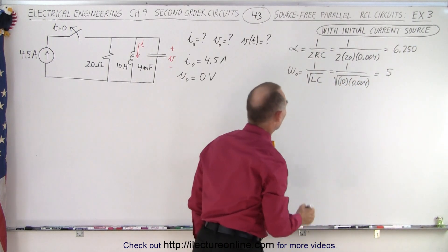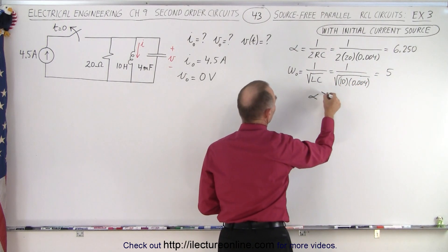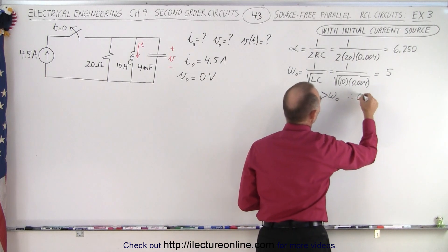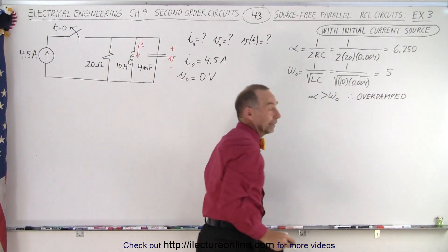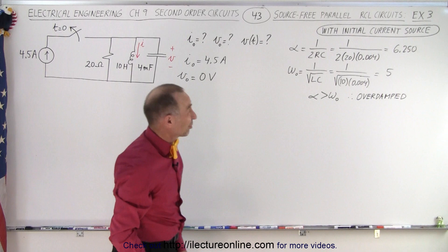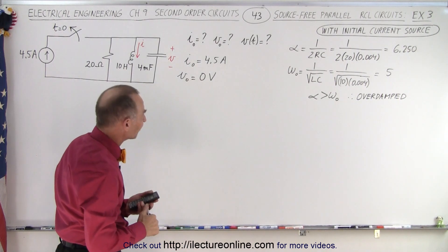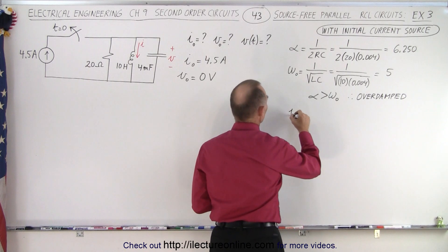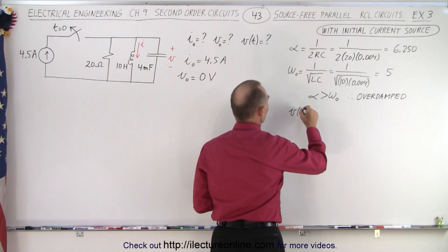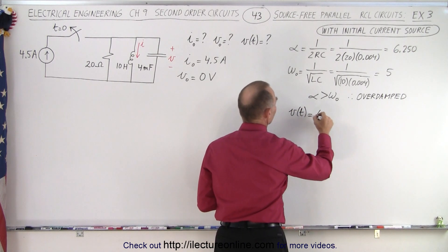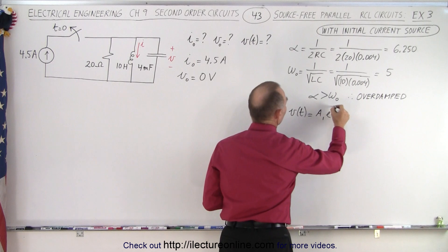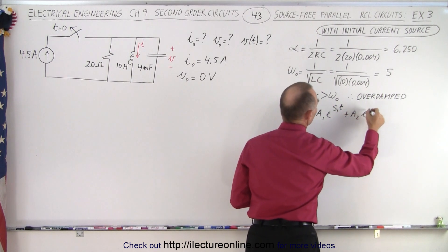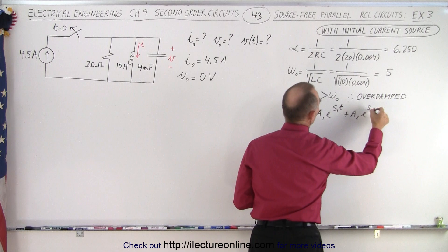We can see that alpha (6.25) is larger than omega-naught (5), which means this is an overdamped system. For an overdamped system, the general equation for voltage as a function of time is: v(t) = A1·e^(s1·t) + A2·e^(s2·t).